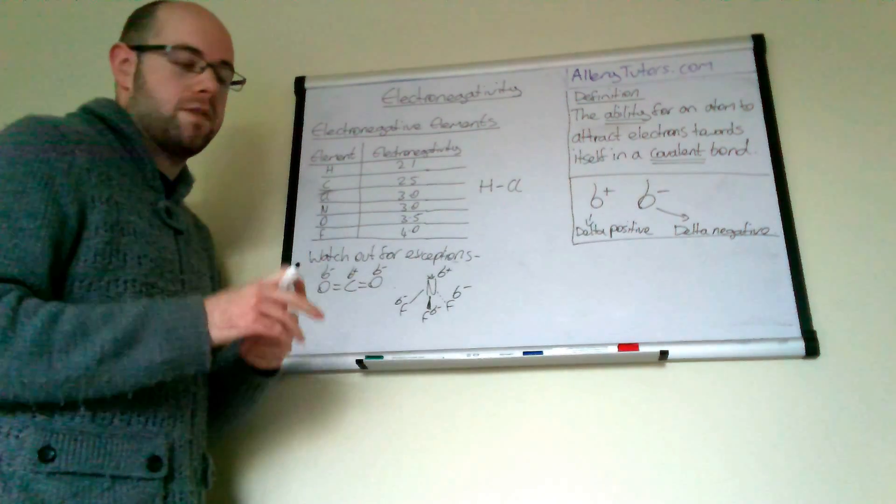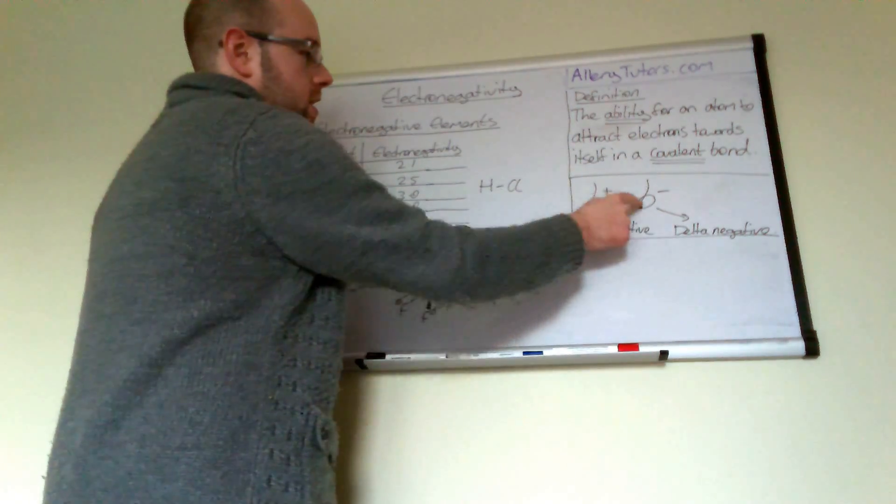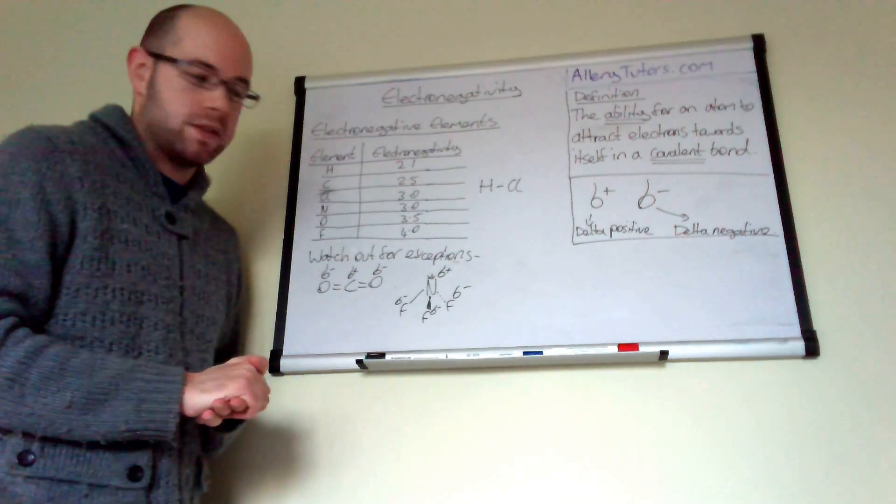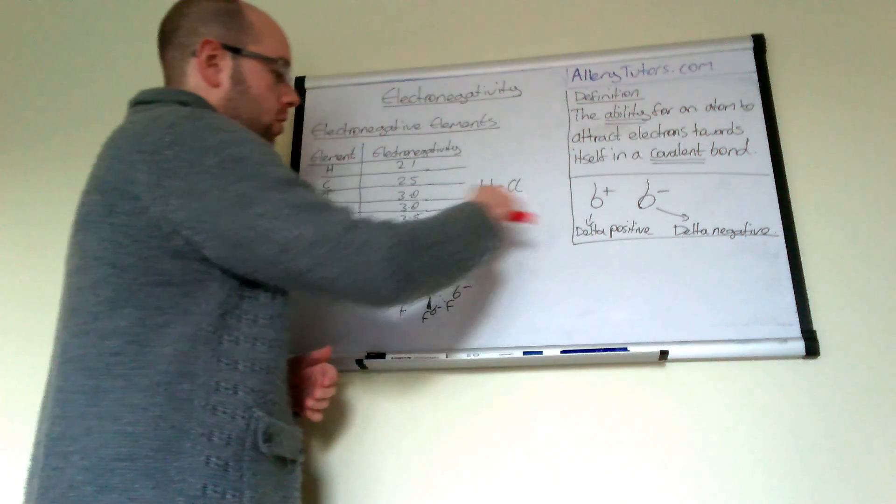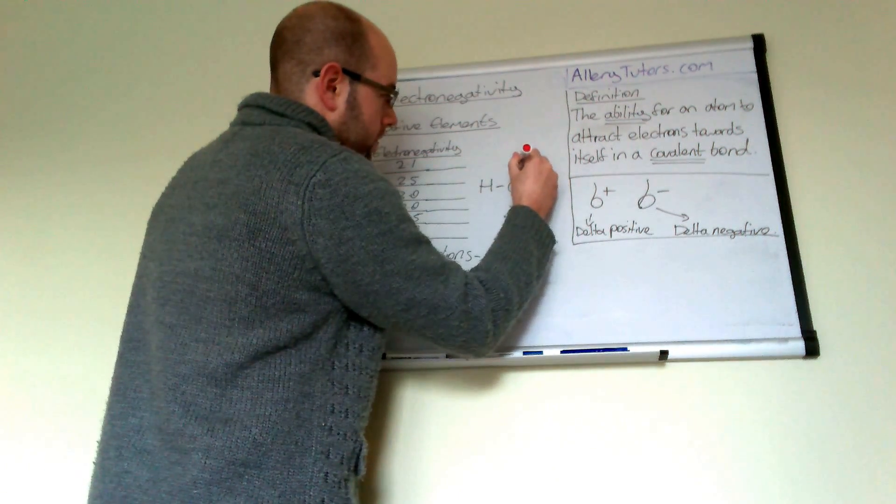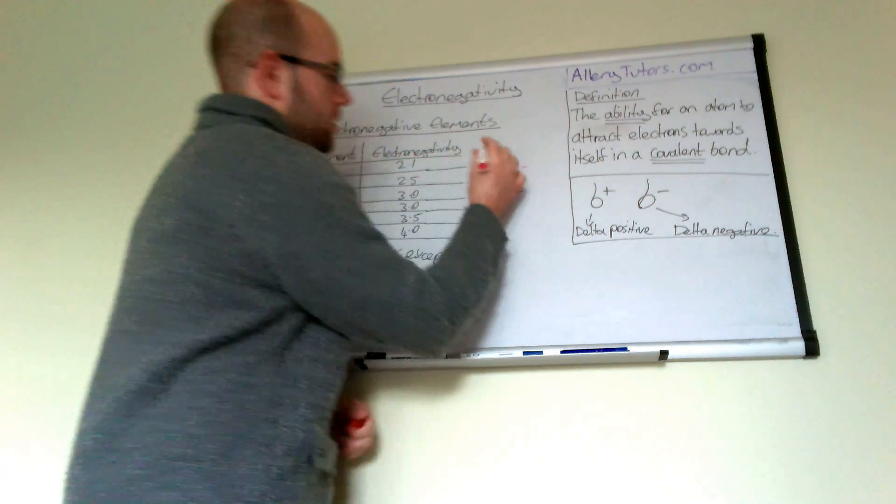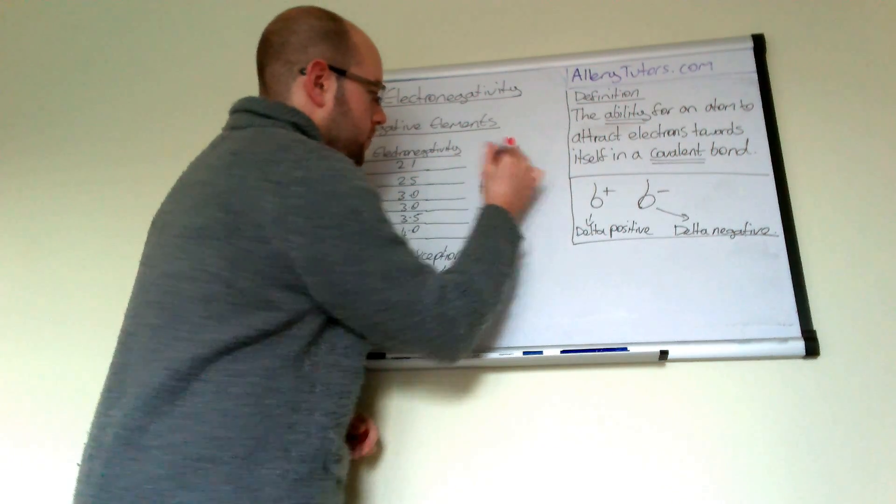What that means is you get a polarity—a charge difference. We can represent this using delta positive (δ+) and delta negative (δ-) symbols. Because chlorine is more electronegative than hydrogen, it pulls electrons towards itself and forms a delta negative charge, while the hydrogen forms a delta positive charge because the electrons have been taken from it.